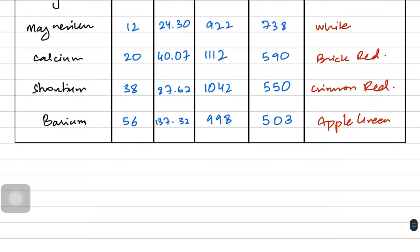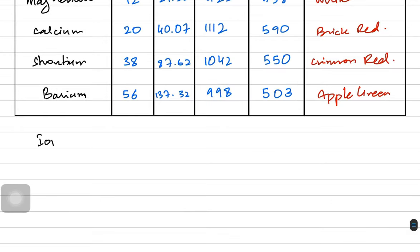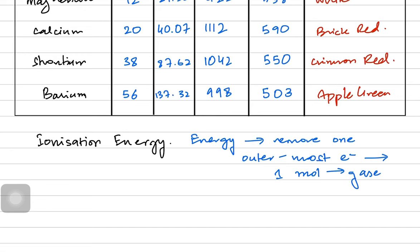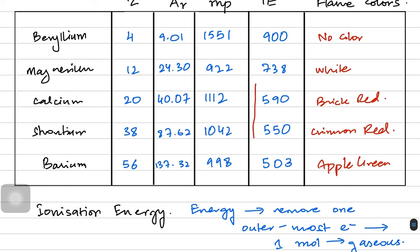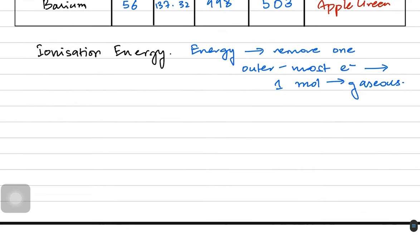Let's talk about ionization energy first, since it follows a very simple trend. Ionization energy is the energy needed to remove one outermost electron from one mole of gaseous atoms or ions. The ionization energy values are decreasing. Why is that? Beryllium atom is smaller, magnesium is bigger.